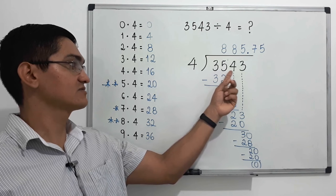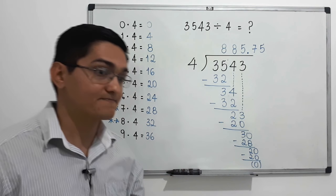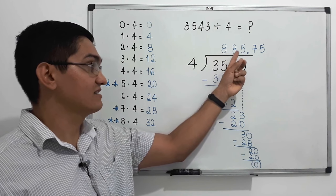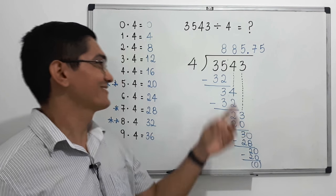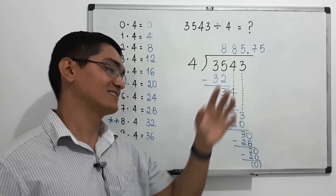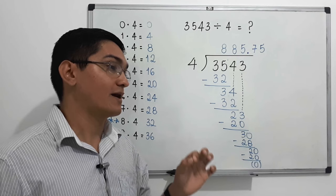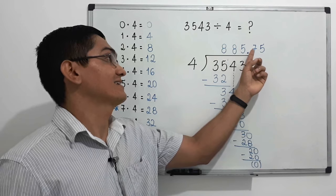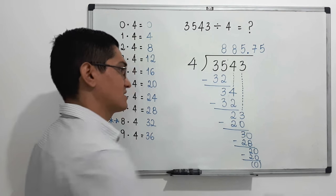We can now say that 3543 divided into four equal parts gives each part a value of 885.75. For instance, if you have three thousand five hundred dollars and you want to divide it into four equal parts, each part has the value of eight hundred eighty-five dollars and seventy-five cents.